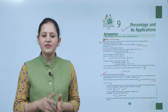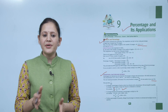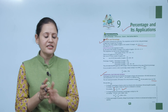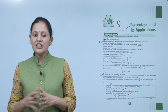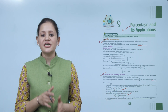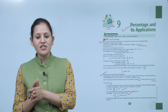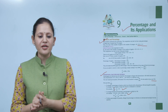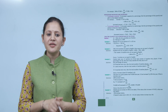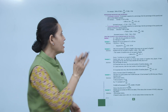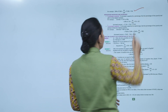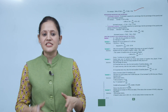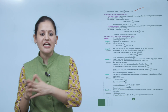To change a decimal to percentage, multiply by 100. For example, 0.45 × 100 = 45%. To find a percentage of a quantity, change the percentage to a fraction or decimal and multiply by the quantity. For example, 20% of 200 = 200 × 20/100 = Rs. 40.